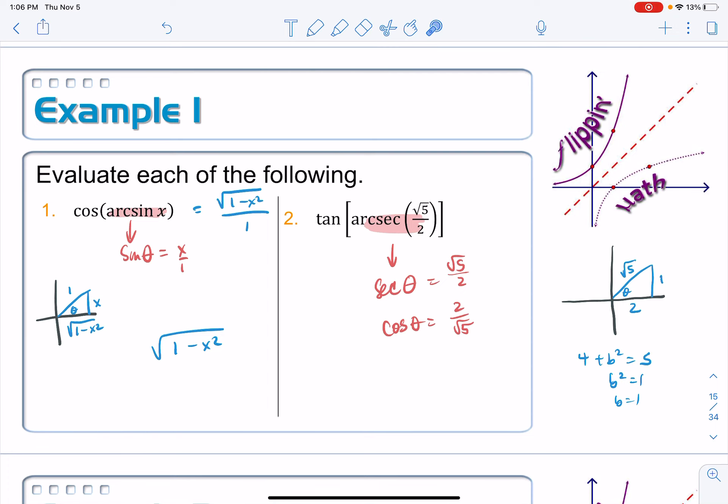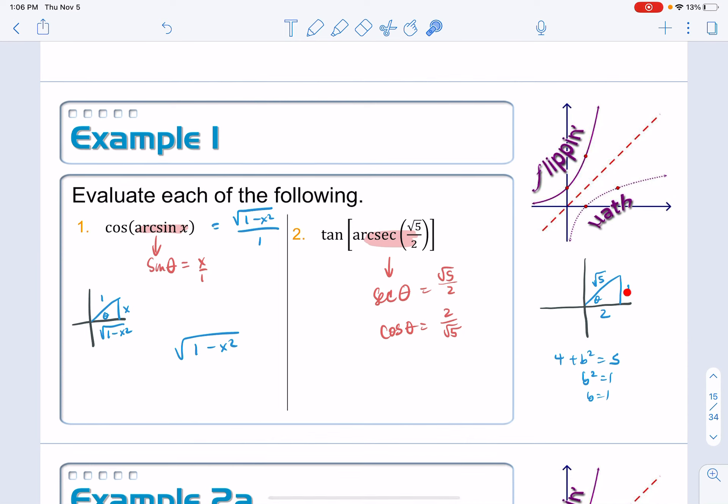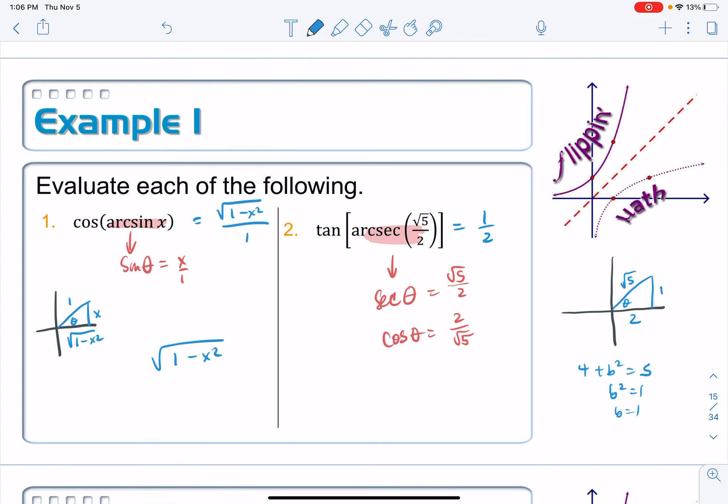And then I want to take the tangent, and the tangent is the opposite over the adjacent, and we just get the ratio 1 half. All right, here we go.